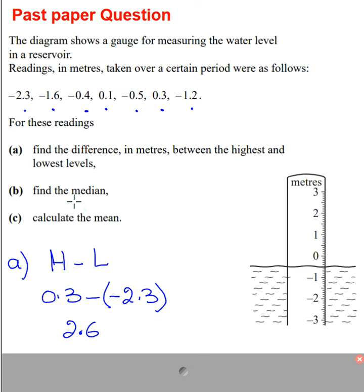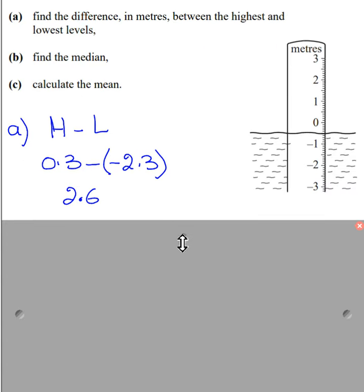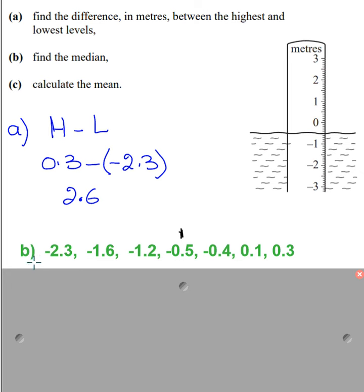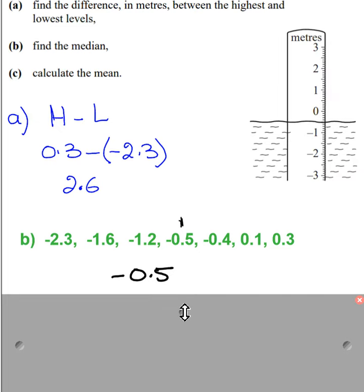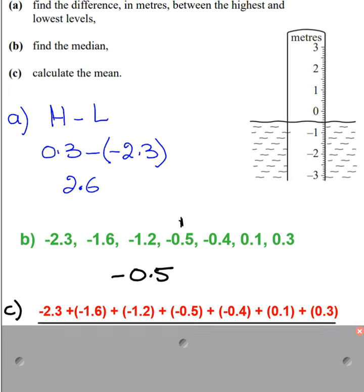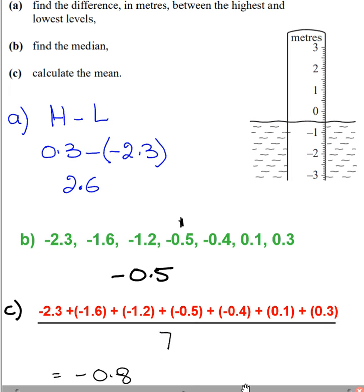Part B is saying find the median, and we have just seen how to find the median. We will rearrange this data in ascending order and then pick up the central data. When I rearrange it in ascending order, there are seven data points. So middle data will be at the fourth place. My median is minus 0.5. To calculate the mean, we have to add up the data and then divide it by total number of data. So my mean is minus 0.8 in this case.